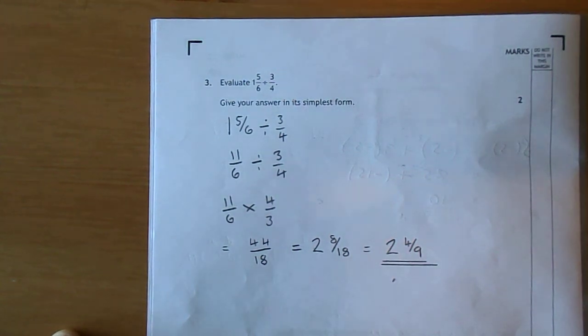So here we are doing the 2017 National 5 Mathematics Paper 1 and I'm on to question 3, where we have to evaluate 1 and 5 sixths divided by 3 quarters.